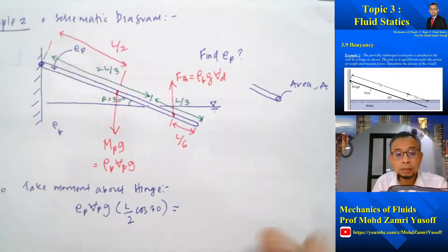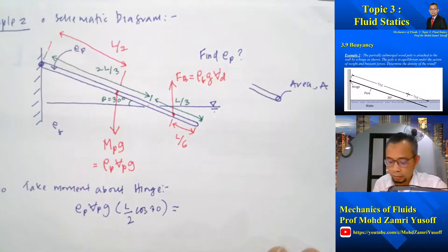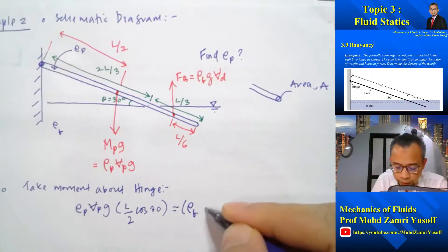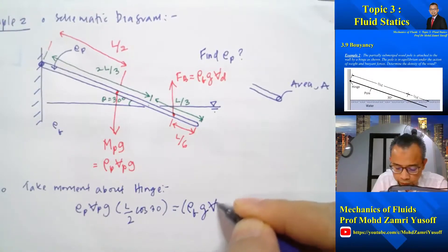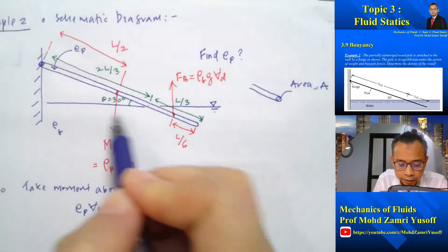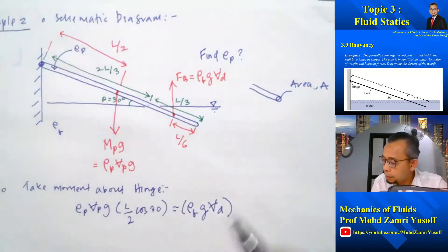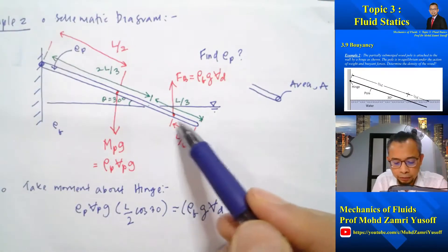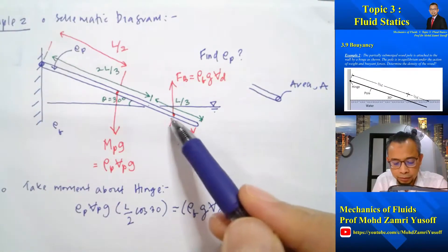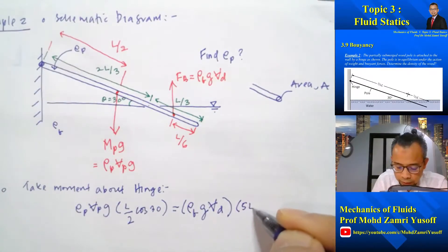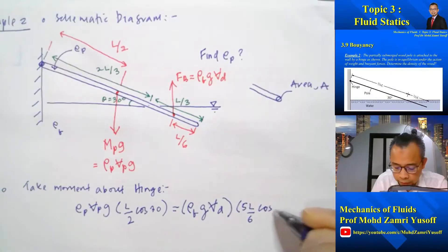This is balanced by the buoyancy force, which equals ρ_fluid × g × V_displaced, multiplied by its perpendicular distance from the hinge. The buoyancy force acts at L/6 from the submerged end, and since the full length is L, the distance from the hinge is L minus L/6, which equals 5L/6. So the distance is 5L/6 × cos30.